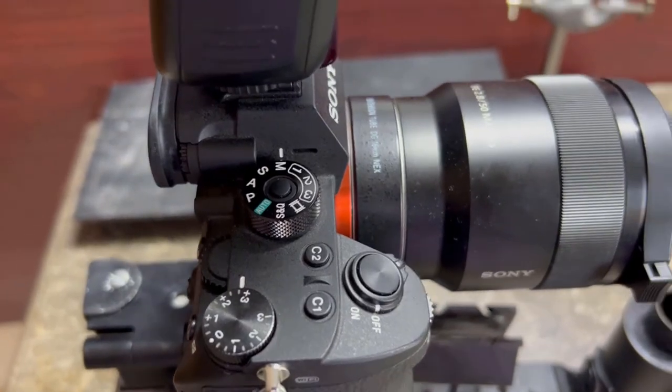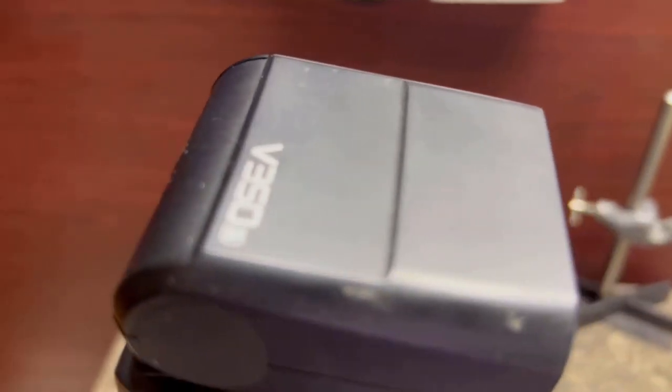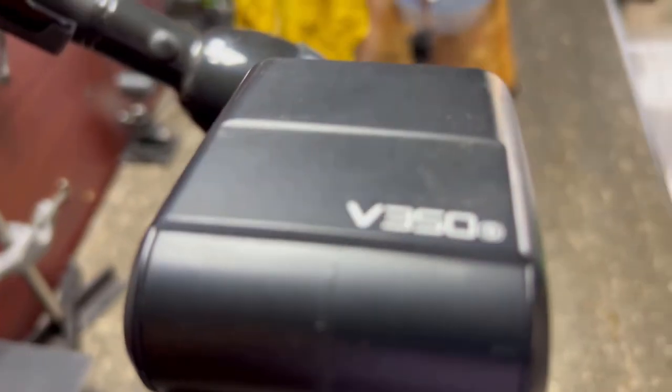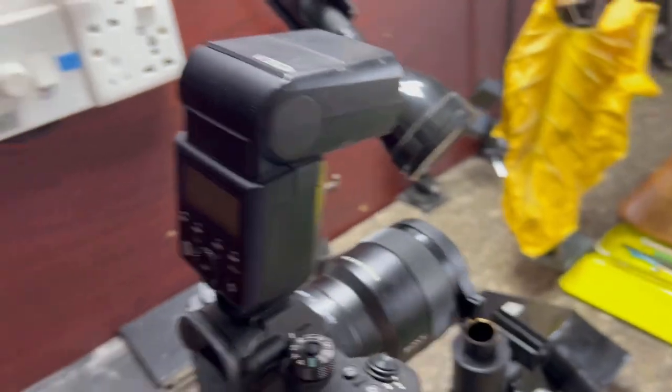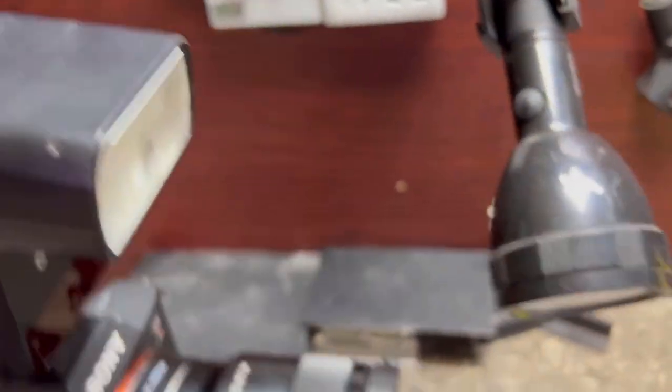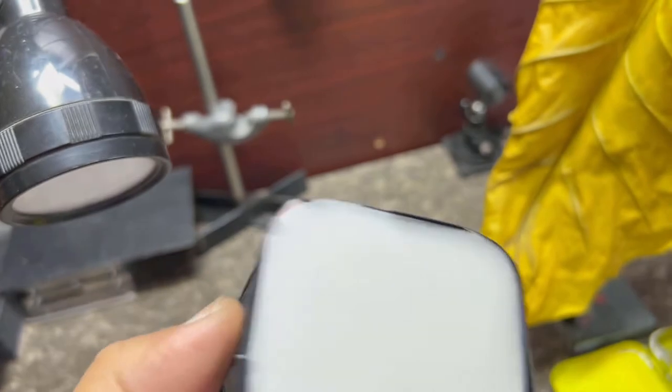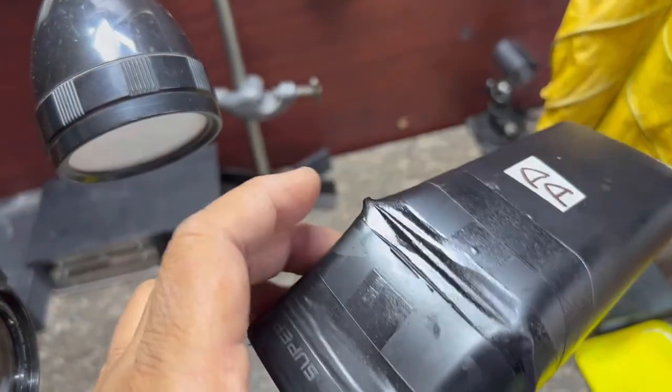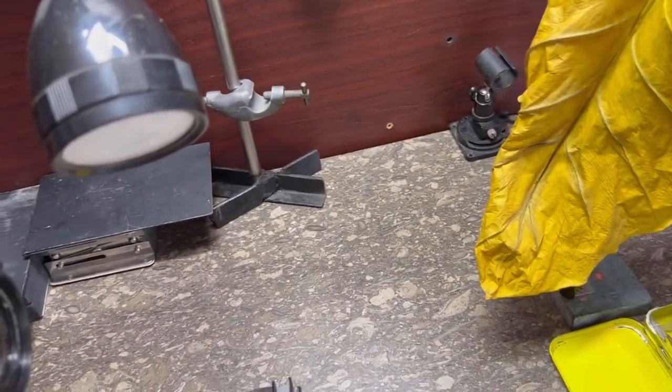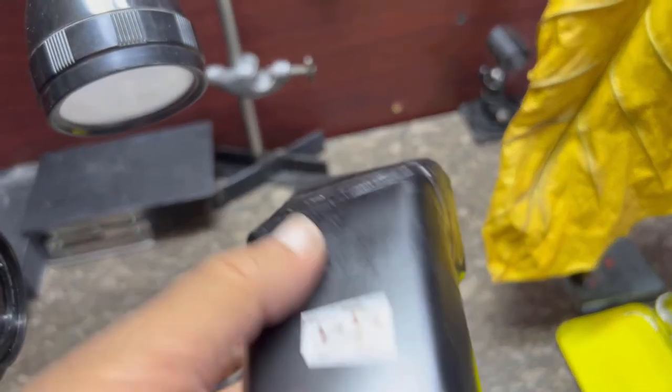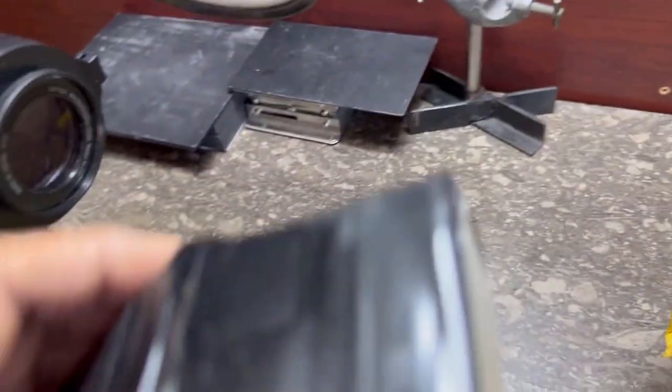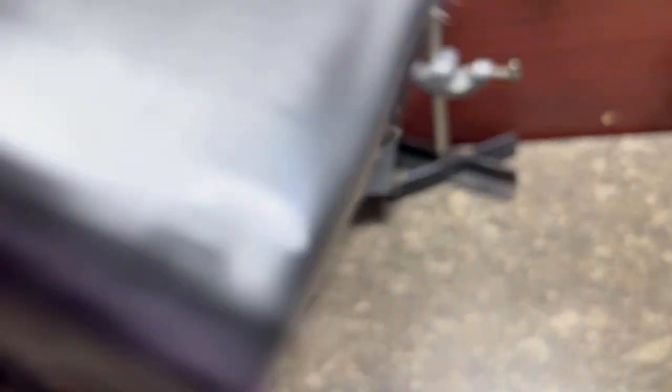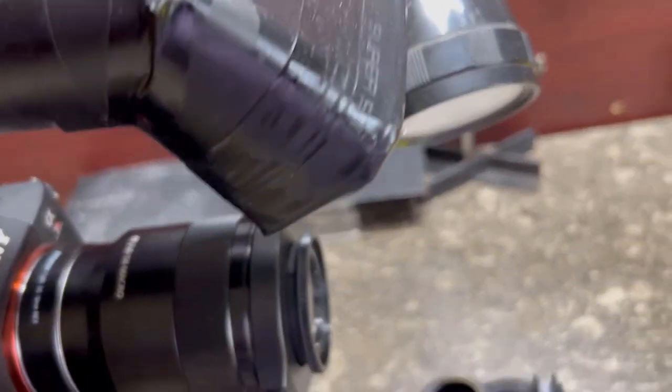And finally, this is the flash, Godox P350. This is my flash. And I'll be using one DIY diffuser. This is, I made it myself for diffusion. In future, I have a plan to explain how to make these diffusers and how it works with macro. This is an essential part of macro photography.